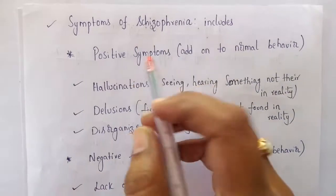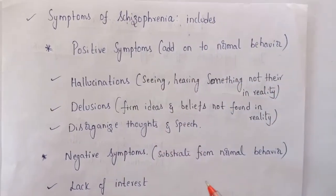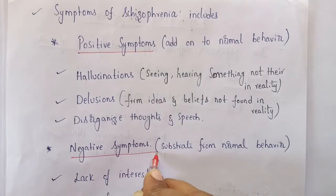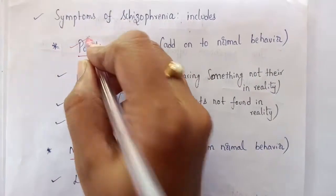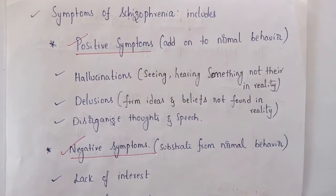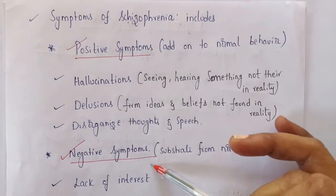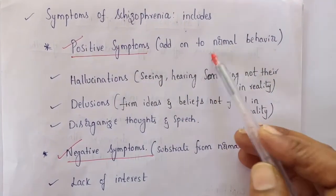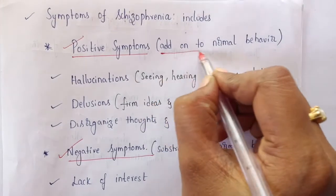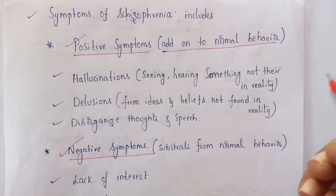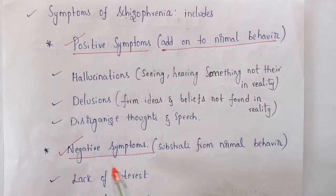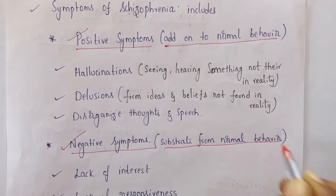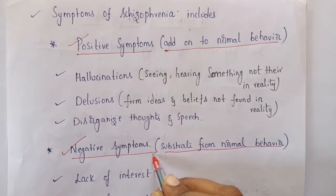The various symptoms of schizophrenia are majorly divided into two types: positive symptoms and negative symptoms. Positive symptoms are those added to the normal behavior of a person, whereas negative symptoms are those subtracted from normal behavior.